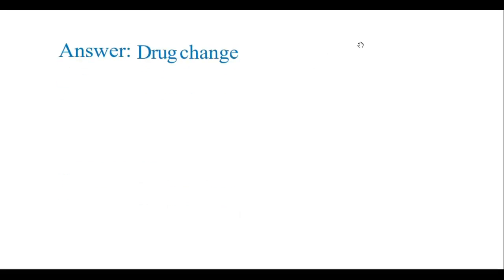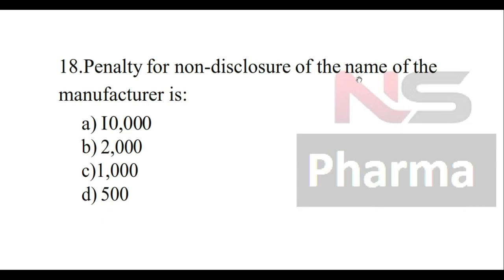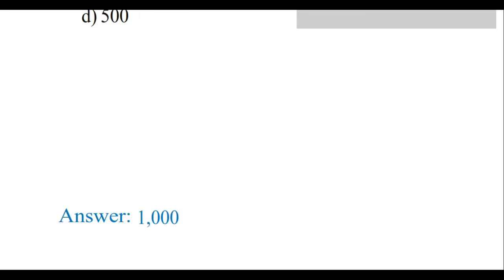Question number eighteen: Penalty for non-disclosure of the name of the manufacturer is — Option A: Ten thousand, Option B: Two thousand, Option C: One thousand, Option D: Five hundred. The answer is one thousand.